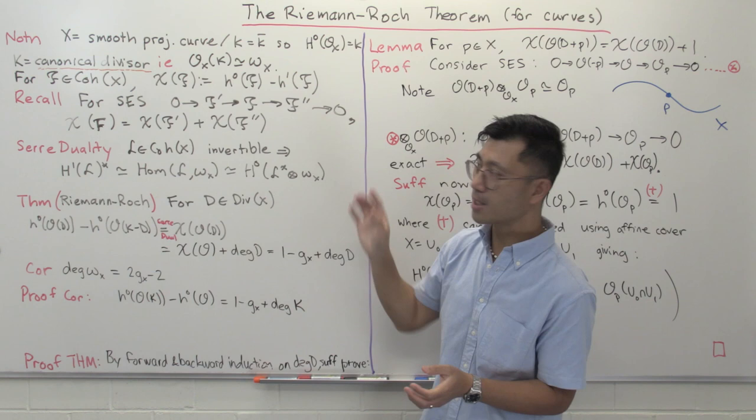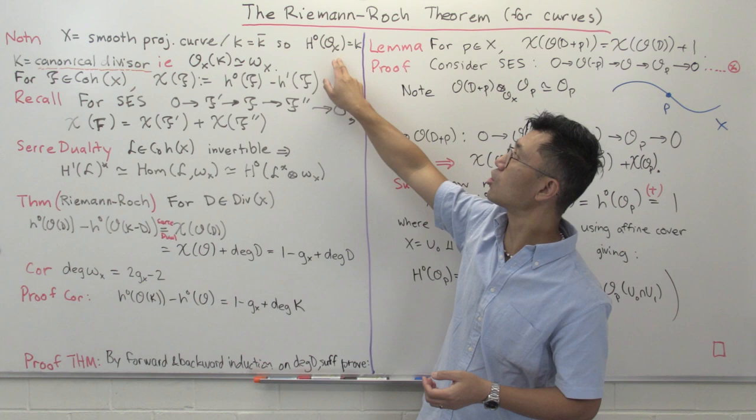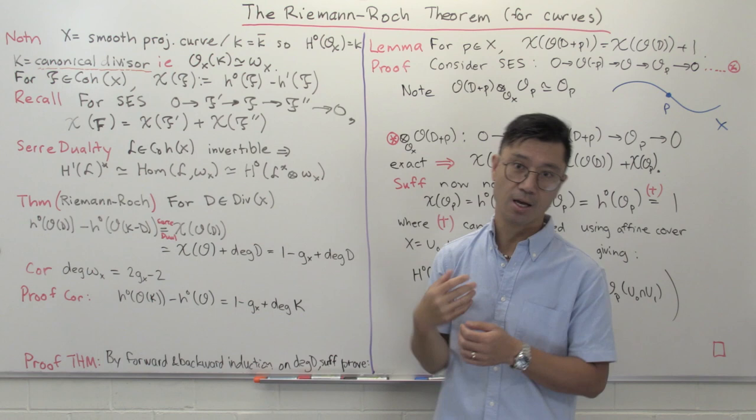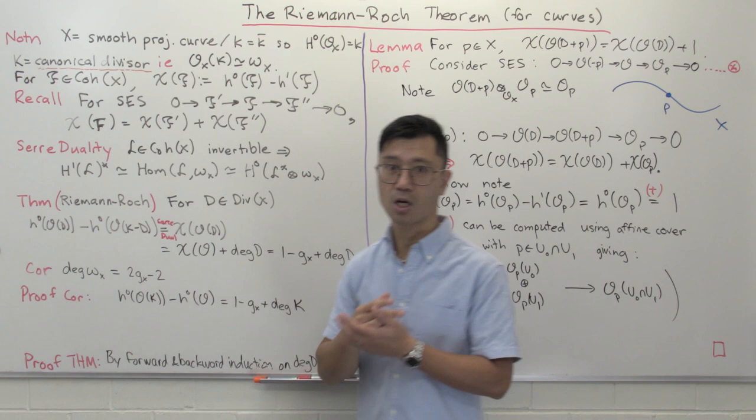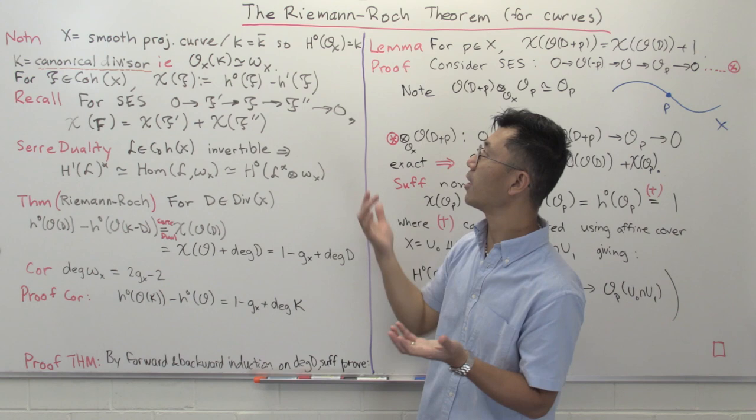Let's set up our notation. Here, X will be a smooth projective curve over our algebraically closed field k. One of the things that means is that if you look at the structure sheaf of X, O_X, and you look at the global sections, that's just equal to k. So the only regular functions which are globally defined on this projective curve are going to be k. That's one of the reasons why we like projectivity here — it makes all these spaces of global sections and even the cohomologies finite dimensional, and in this case it's actually just equal to k.